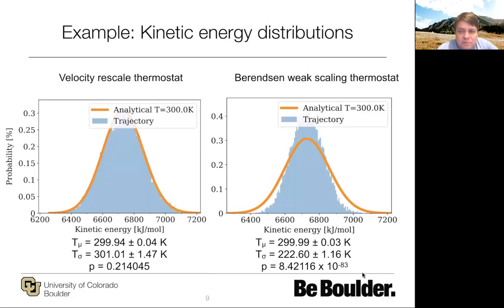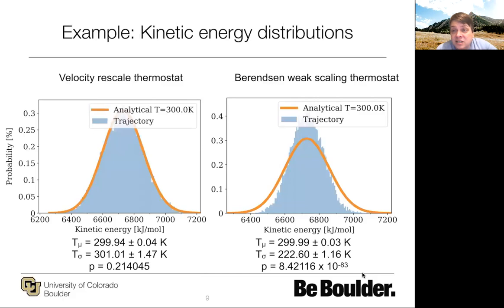For some properties you might get the right answer even with the weak-coupling thermostat, because they may only depend on the average kinetic energy. But if you're interested in the heat capacity measured by fluctuations, for instance, you'll get a wrong answer because the fluctuations are too small.